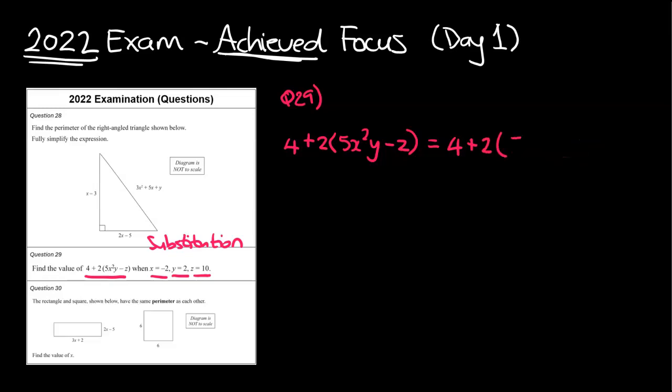So let's get into it. So the 4 is going to be unchanged. The 2 is going to be unchanged. And then we've got to figure out this mess that's going to be in the brackets. So that's going to be 5 times x squared. x squared is negative 2. So negative 2 times negative 2 is equal to positive 4. So that will be times 4. We've then got y, which is 2, so that's going to be times 2. And then we've got minus z, which is going to be minus 10.